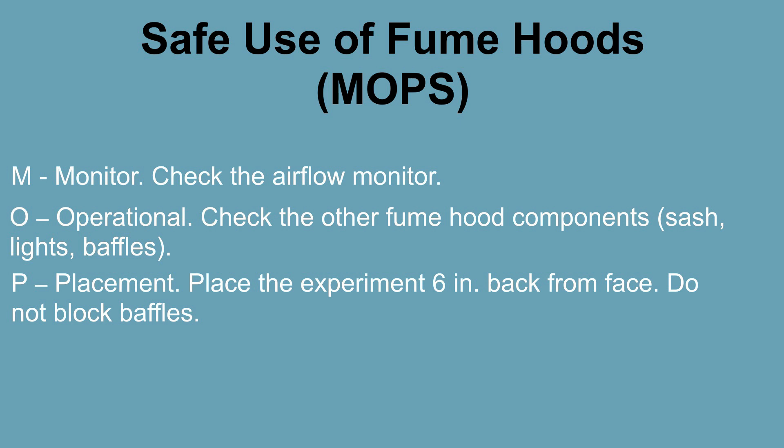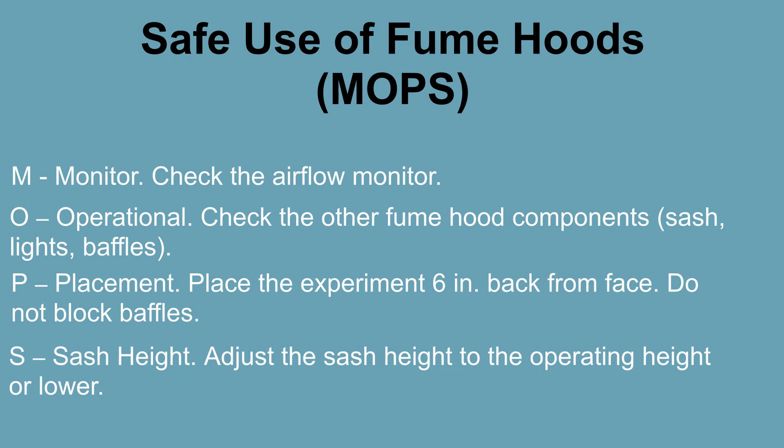S is for Sash Height. Adjust the sash height to the working height or lower. The working height is indicated by an arrow on the yellow, gold, or green certification decal affixed to the front side of the hood. When the sash is placed at the proper working height, it can also provide a barrier against unanticipated explosions, fires, spills, or splashes, and help conserve energy.